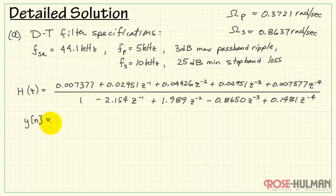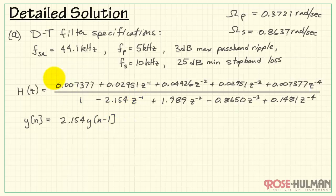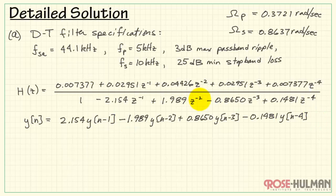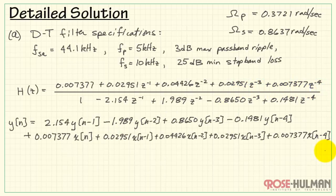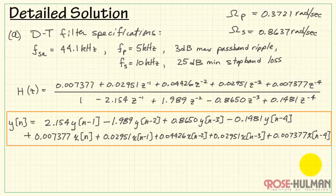The only thing left is to multiply top and bottom by Z-inverse to the fourth power, which clears the leading term to 1, and the remaining terms become successive powers of Z-inverse. This is the discrete-time filter system function H(Z) and the finished result. To convert to a difference equation: the 1 corresponds to Y(n), Z-inverse terms correspond to Y(n-1) and so on. Moving the denominator terms to the right-hand side switches the sign, and the numerator coefficients give the X(n) terms. This is the difference equation for Part A.